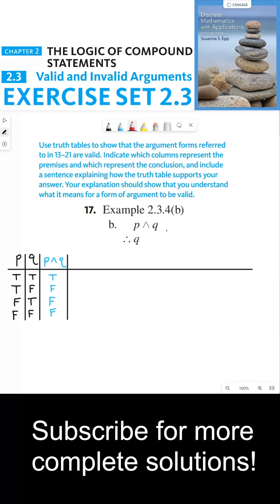So to determine whether or not this form of argument is valid, we have to only consider the lines in which the assumptions are true. If the assumptions are false, then the argument is valid vacuously.